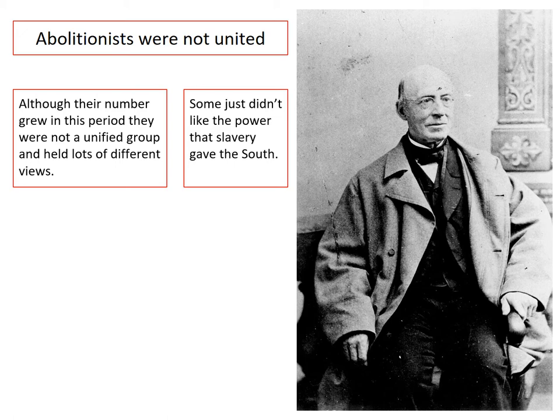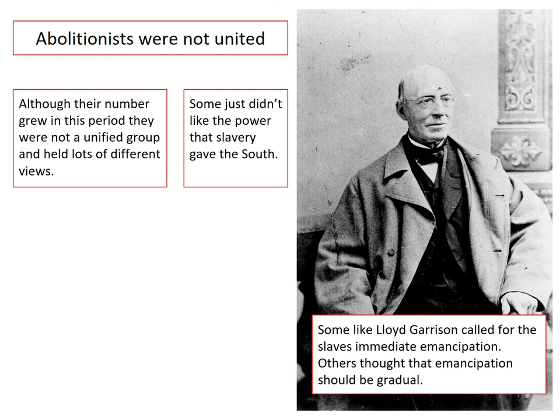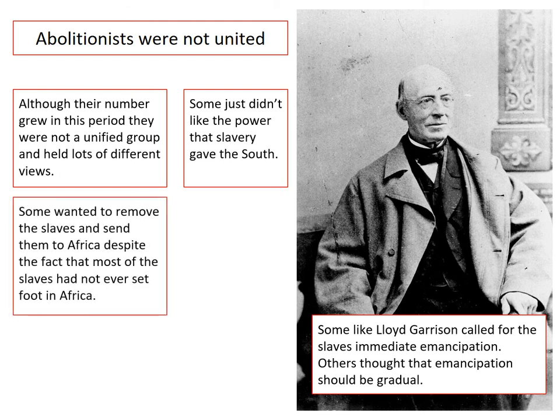Some abolitionists just didn't like the power that slavery gave the South — the South tried to tell the North what to do with legal cases of enslaved people that ran away. Some abolitionists, like Lloyd Garrison, called for the slaves' immediate emancipation. Others thought that emancipation should be gradual. Some wanted to remove the slaves and send them to Africa, despite the fact that most of the slaves had never set foot in Africa. Today we would call this view extremely racist, and it is, but at the time it shows the differing views the abolitionists had.